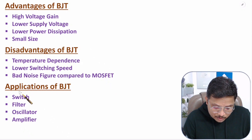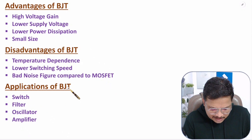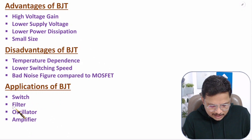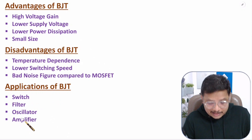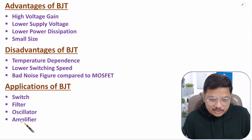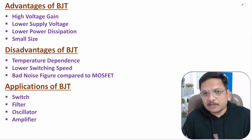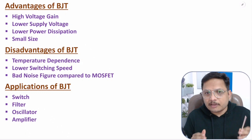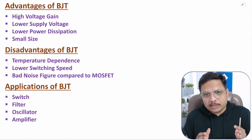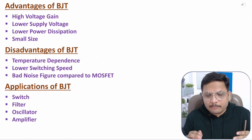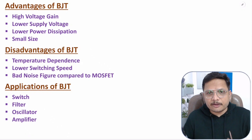Applications of BJT include use as a switch, for filters, for oscillators, and in amplifiers. All these applications will be explained in future videos in this lecture series on basic electronics. I hope you understood this — if anything, please note it down in the comment section. Thank you so much for watching.